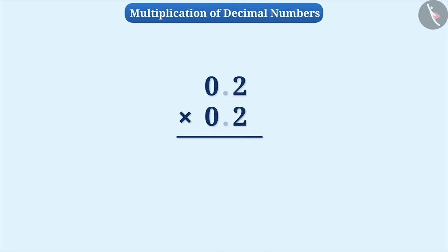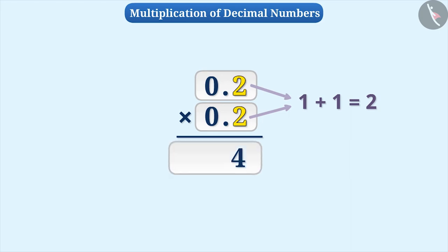We will obtain answer as 4. Then we will check the number of digits after the decimal point in the given numbers to be multiplied, which is 1 plus 1 is equal to 2. So, in the result,